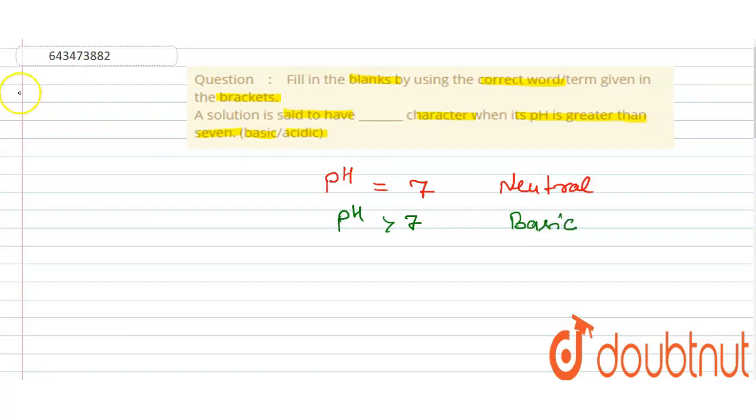But if the pH of solution is less than 7, then the solution will be acidic in nature.